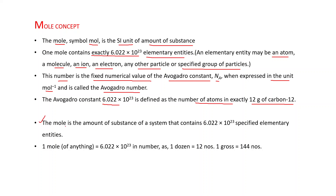The mole is the amount of substance of a system that contains 6.022 × 10²³ specified elementary entities. One mole of anything will always equal 6.022 × 10²³ in number, just as one dozen is always equal to 12 — whether it is a dozen bananas or a dozen apples, it is always 12. In the same way, one mole is always 6.022 × 10²³. Similarly, one gross is equal to 144 in number.